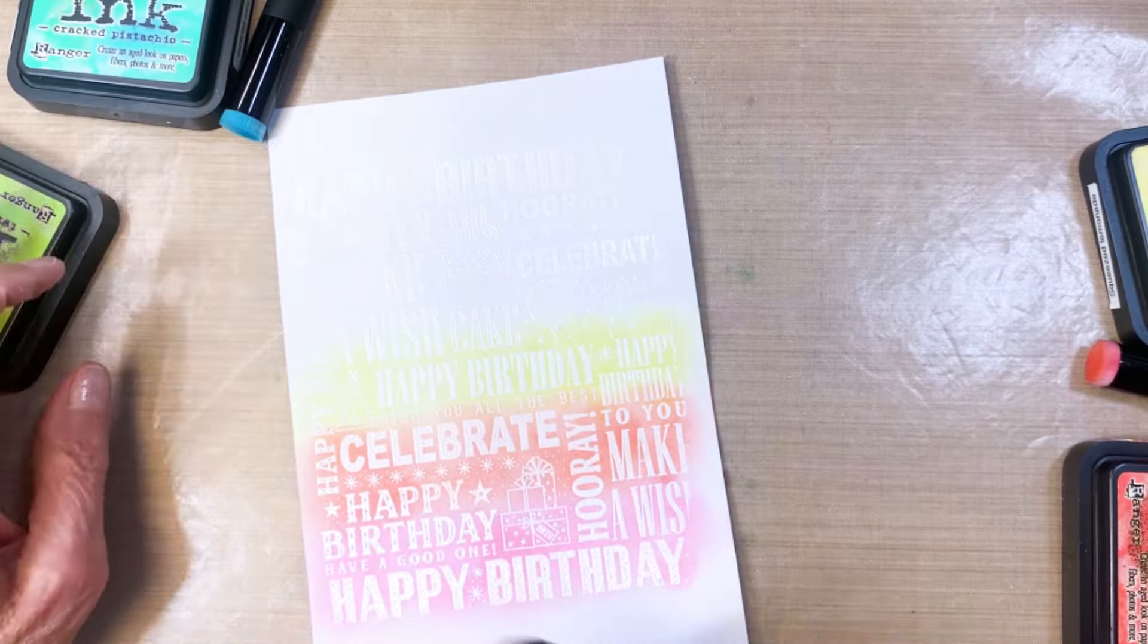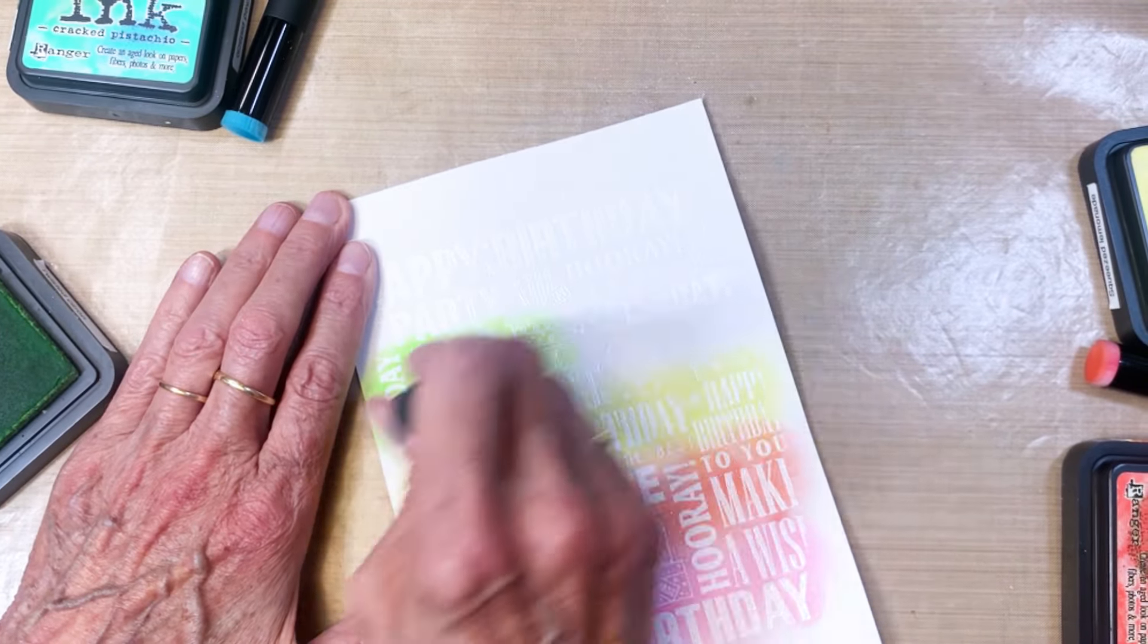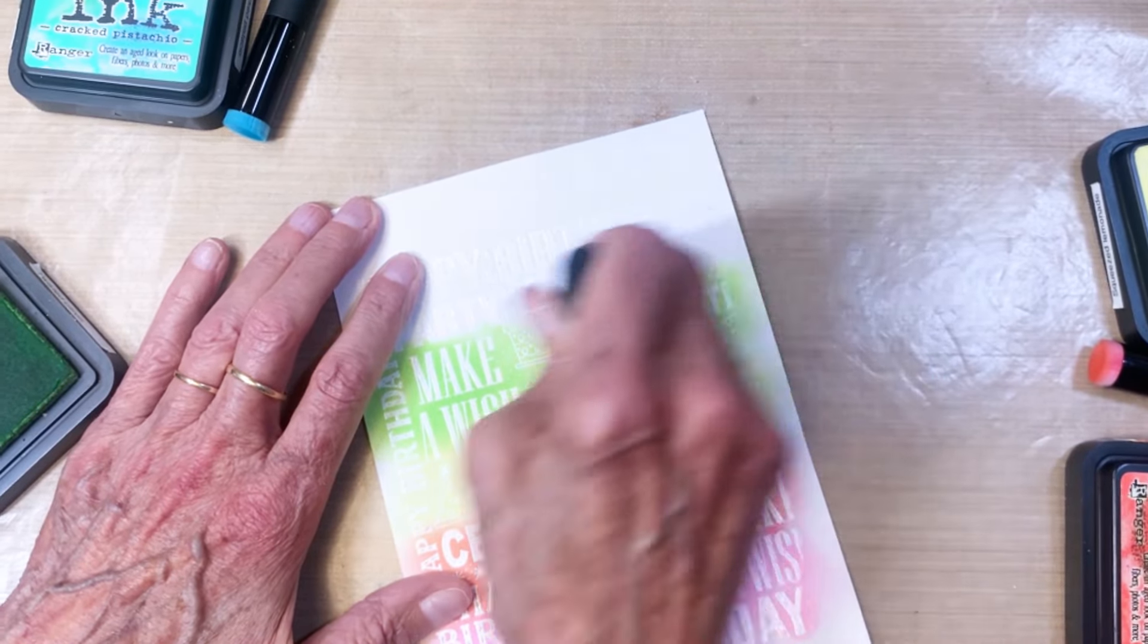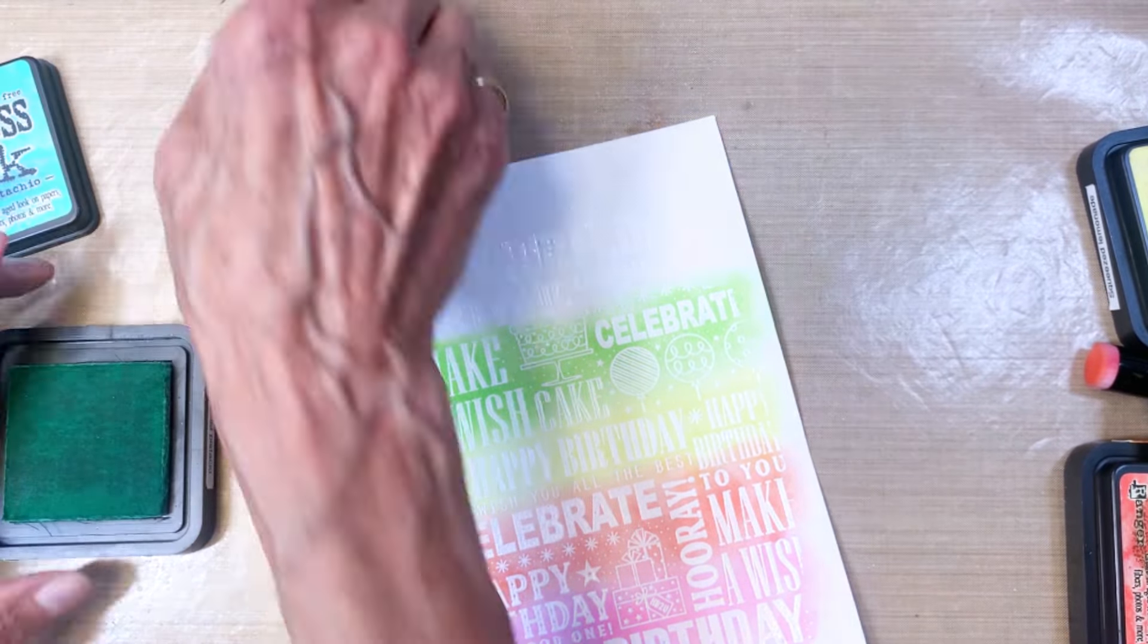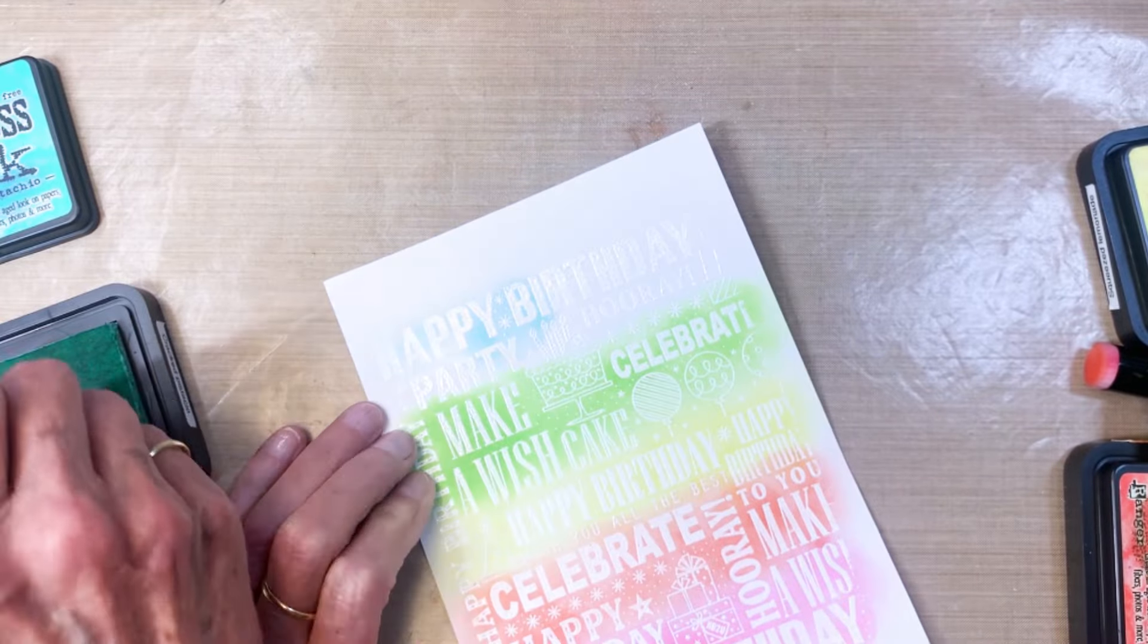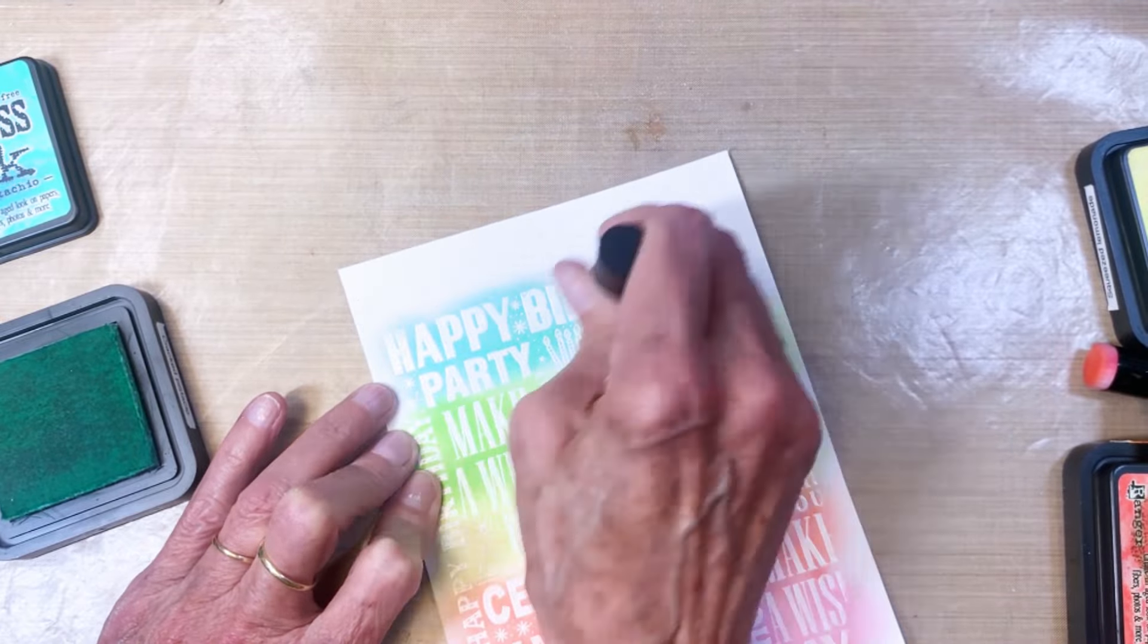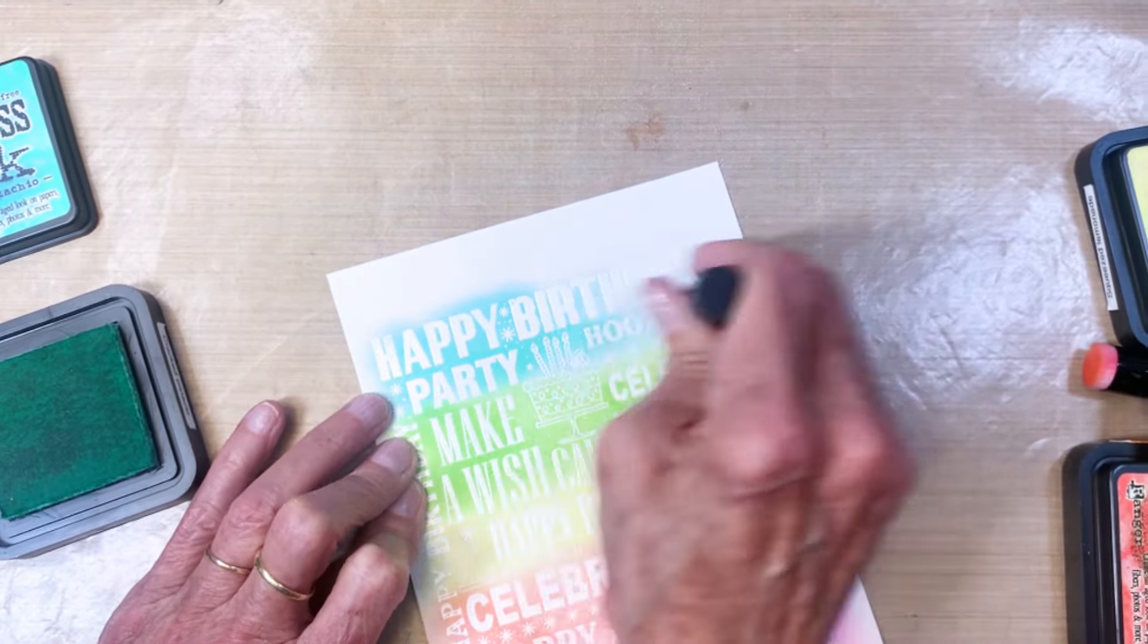We'll start by doing an ink blending technique using my Altenew blending tools and I'm using Kitsch Flamingo, Abandoned Coral, Squeezed Lemonade, Twisted Citron, and Salvage Patina. I'm adding the colors in a rainbow striped pattern and trying to get good coverage because I wanted this background to be very bright.